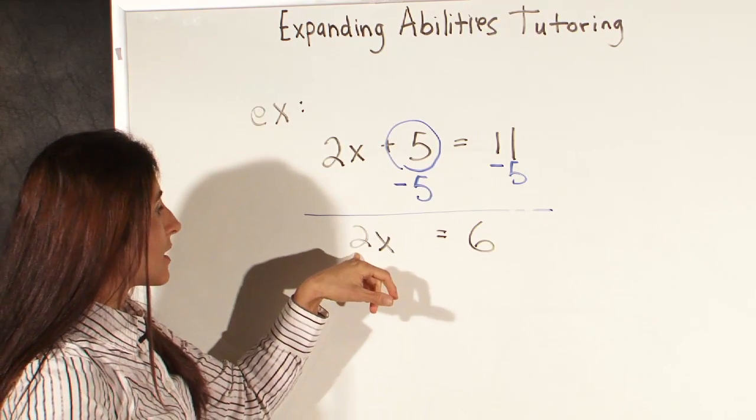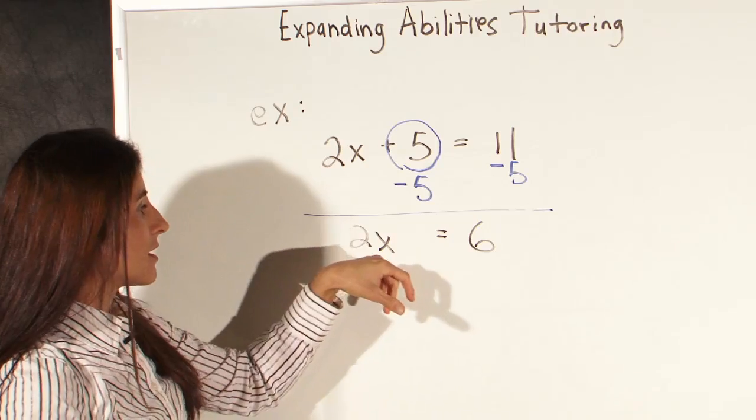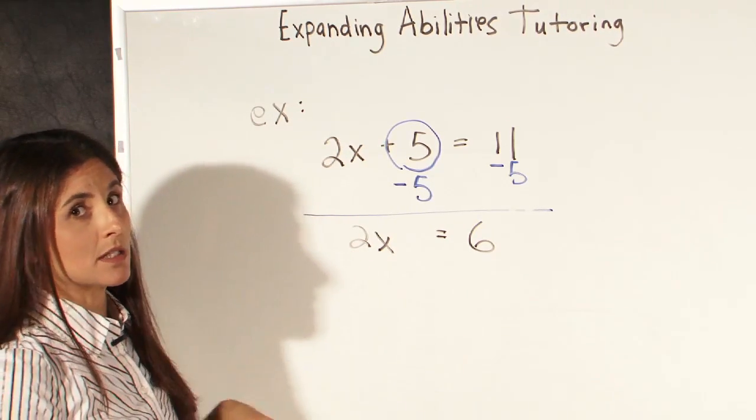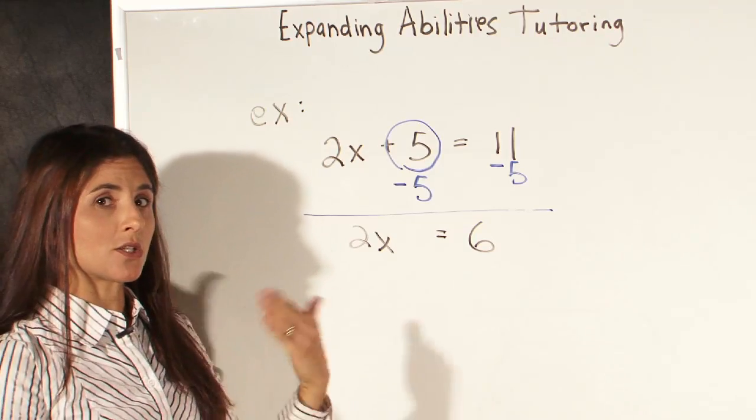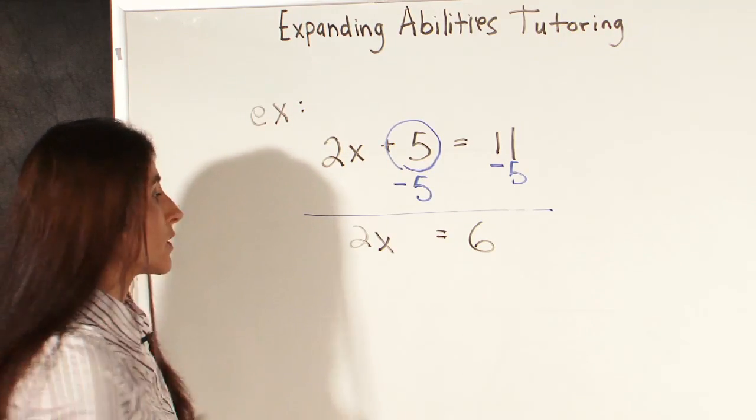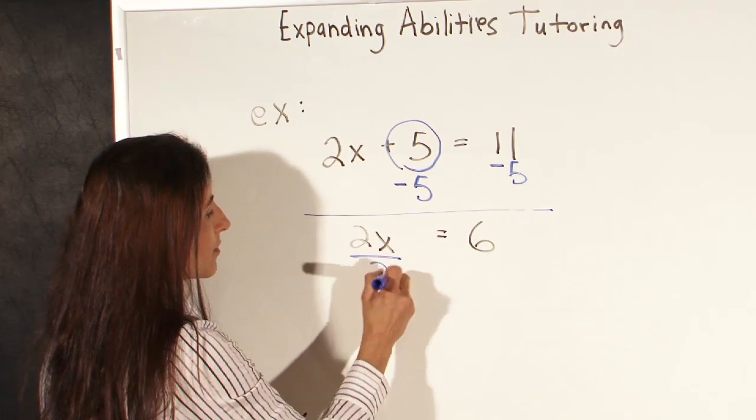The second thing we want to do is remove the number that is connected to the x, and it's connected by multiplication. 2x means 2 times x. So we need to do the opposite of multiplication to get rid of the 2, which means we divide by 2.